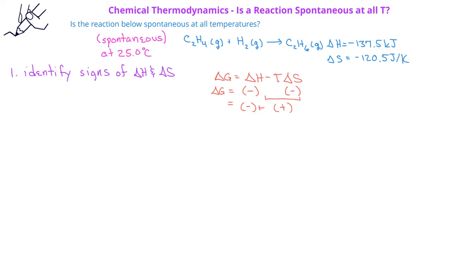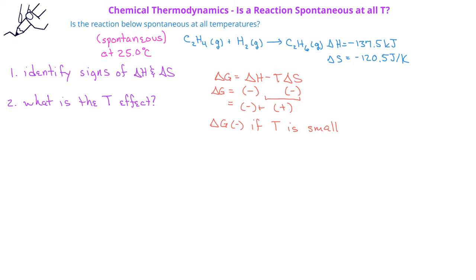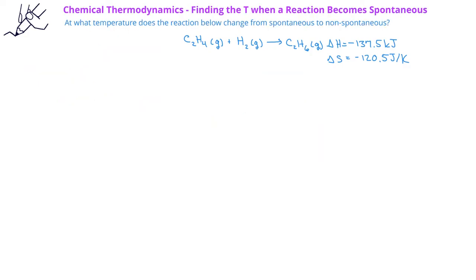With opposite signs for the two terms, we need to consider the temperature to determine the sign of ΔG. In this case, the system will be spontaneous at low temperature — the reaction will have a negative free energy change whenever the TΔS term is small, i.e., at relatively low temperatures.